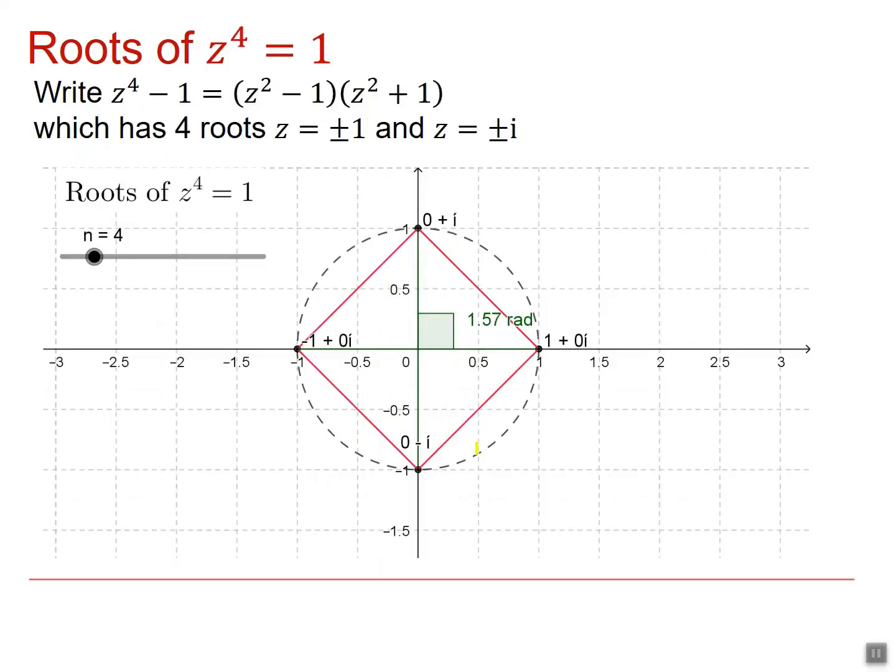Z to the 4 has four roots, plus or minus 1 and plus or minus I. And again, on an Argand diagram, those four roots are spaced equally around a circle of radius 1.